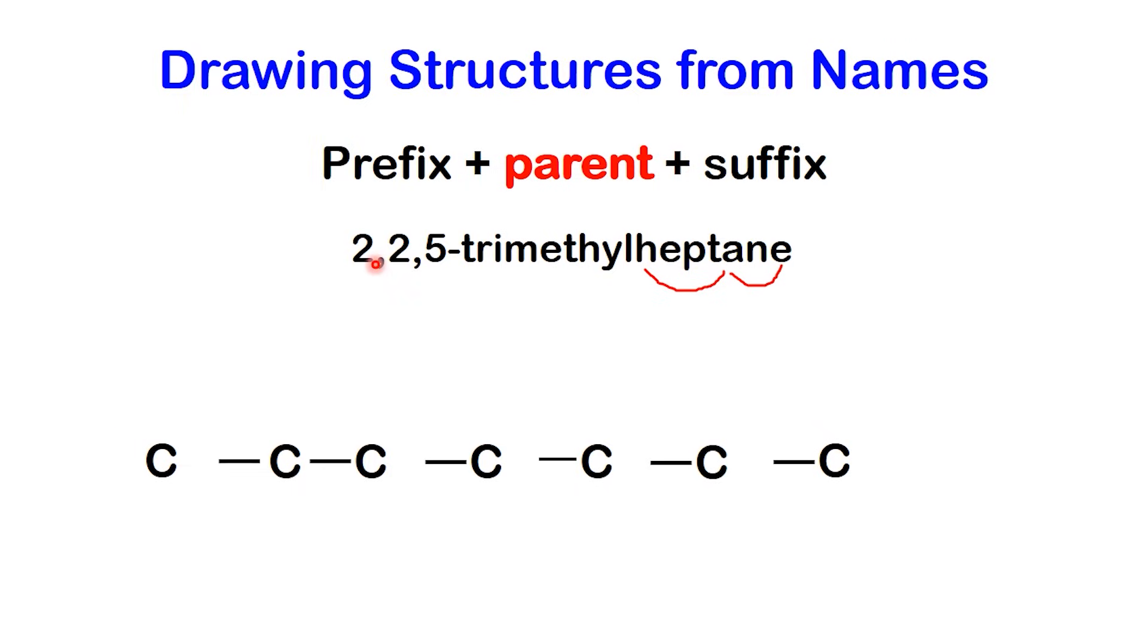Next comes the prefix, 2,2,5-trimethyl. This tells us we have three methyl groups in total. The word tri confirms there are three, and the numbers show us their positions. Two of them are attached to carbon number two, and the third one is attached to carbon number five.